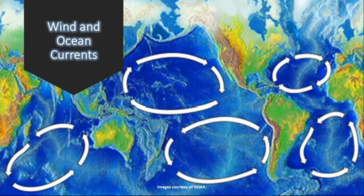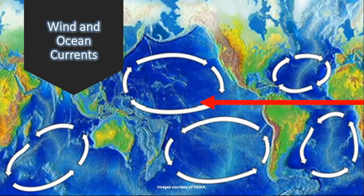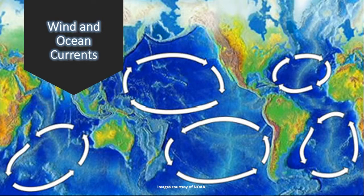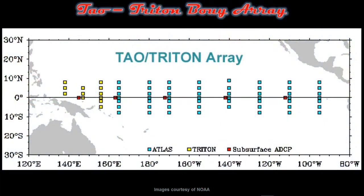The winds at the equator are generally easterlies, meaning they arise from the east and move to the west, taking heat, moisture, and surface water along with them. The trends of these currents have set up long-term climate patterns for many areas of the planet that plants, animals, and even people rely on. Disruptions in these patterns can lead to long-period anomalies like ice ages, and shorter anomalies like El Niño and La Niña, which can change expected short-term weather patterns in a big way.